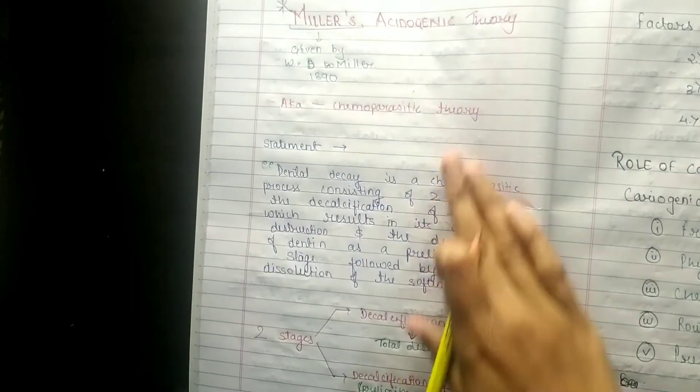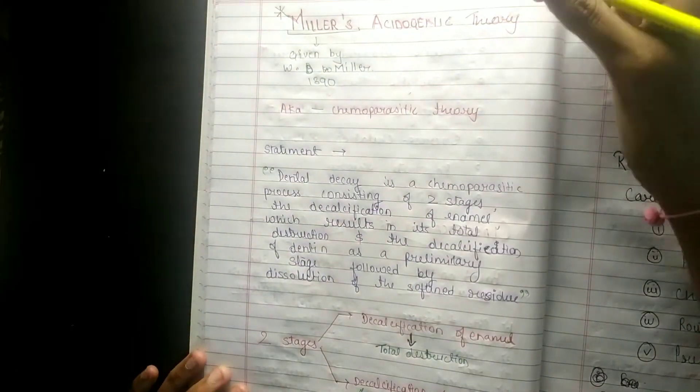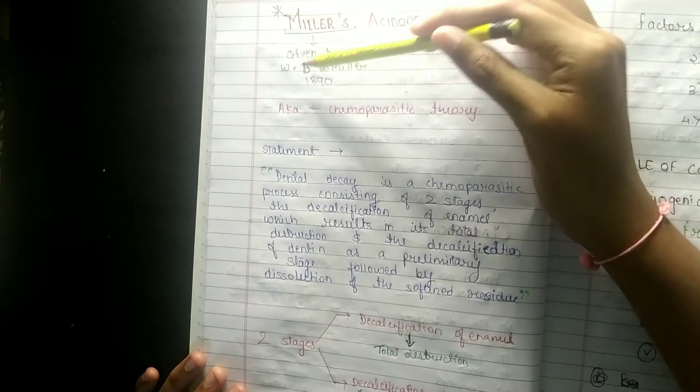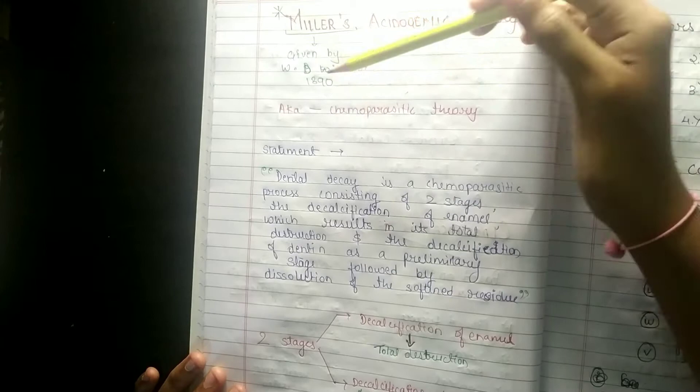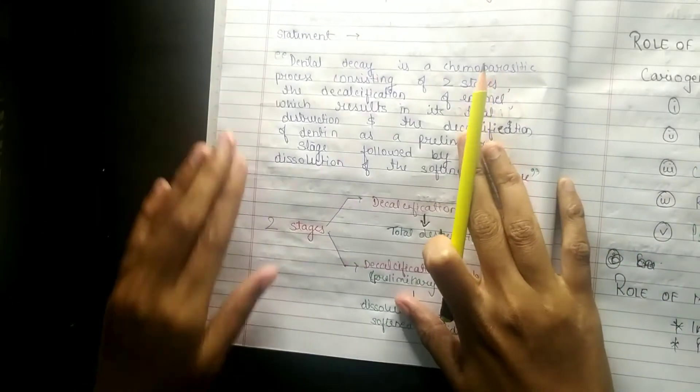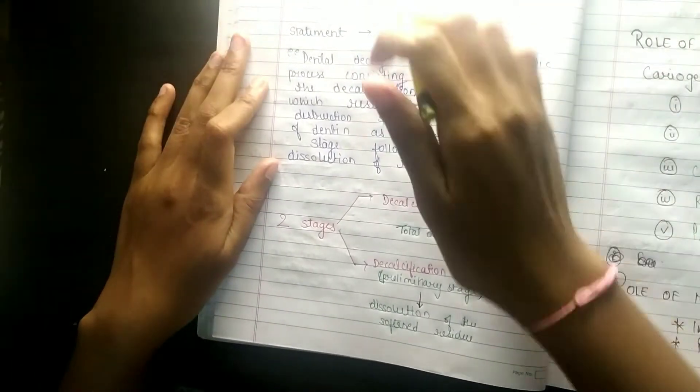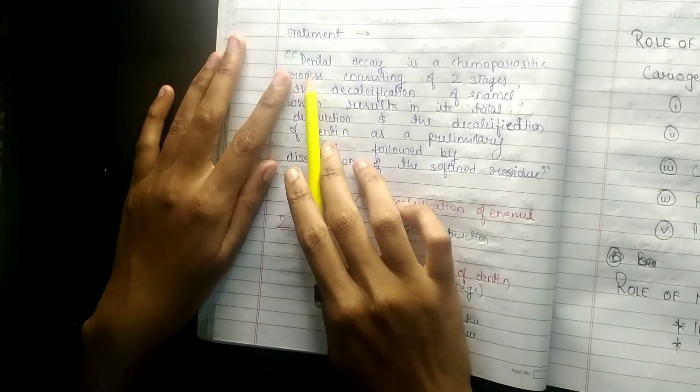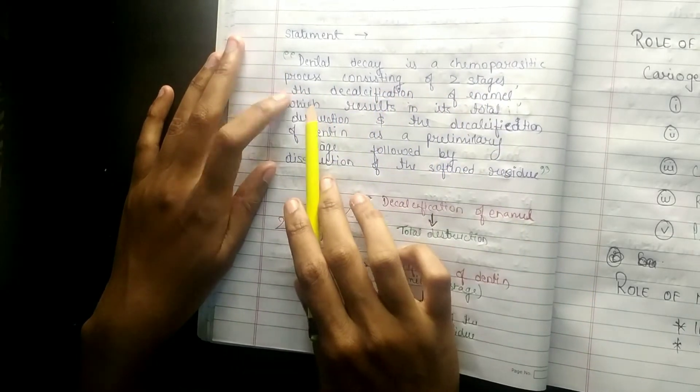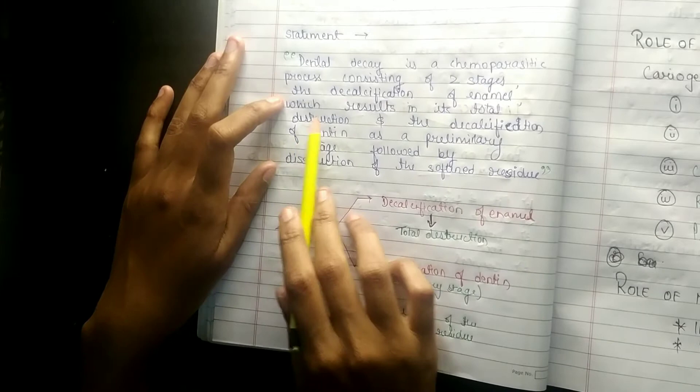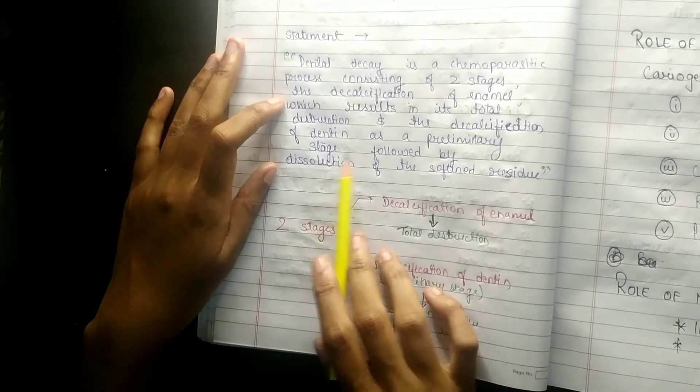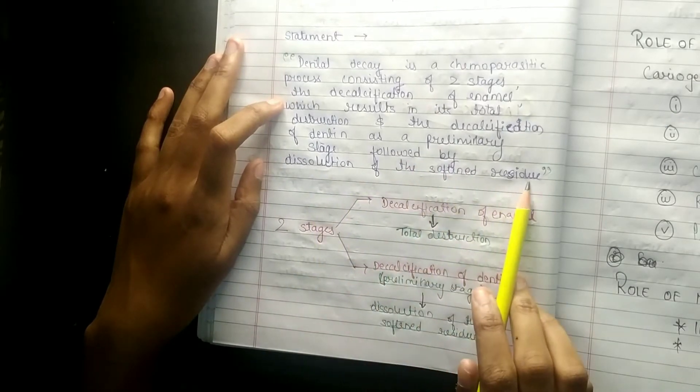Because there are 9 mark questions in your long note. Miller's Acidogenic Theory was given by W.D. Miller in 1890. It is also called chemo parasitic theory. Now what is the statement? Miller says that dental decay is a chemo parasitic process consisting of two stages: the decalcification of enamel which results in its total destruction, and the decalcification of dentine as a preliminary stage followed by dissolution of the softened residues.